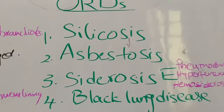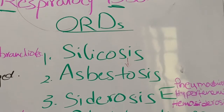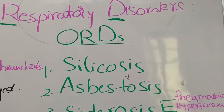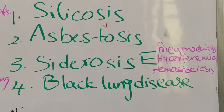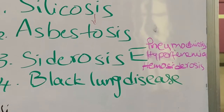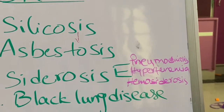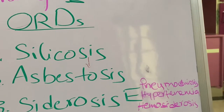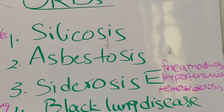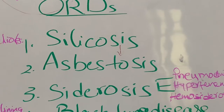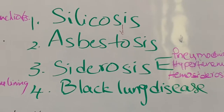The third is siderosis, which occurs in persons long-term exposed to iron particles deposited in the tissues. Depending on the tissue where the iron particles are deposited, it has three subtypes: pneumoconiosis, which occurs in the lungs; and hyperphermia and hemosiderosis, which occur in the alveoli. These two diseases cause recurrent alveolar hemorrhage, resulting in loss of blood.